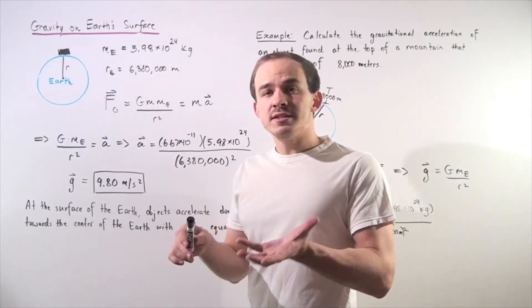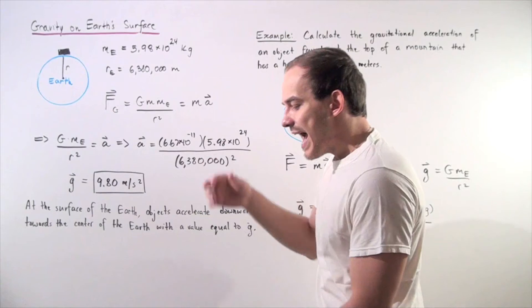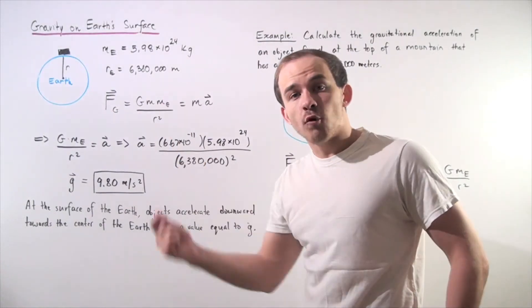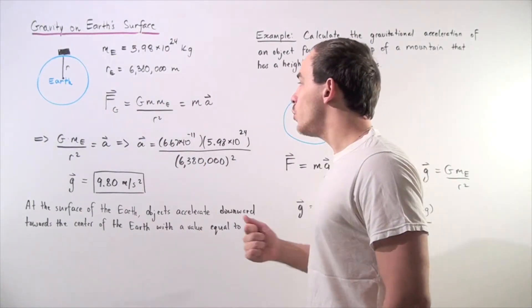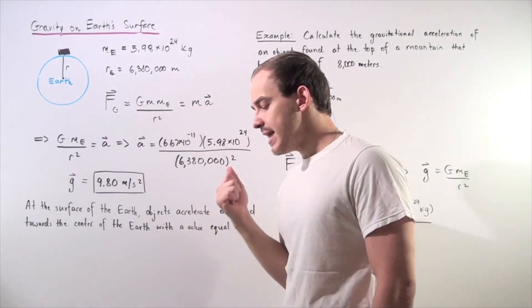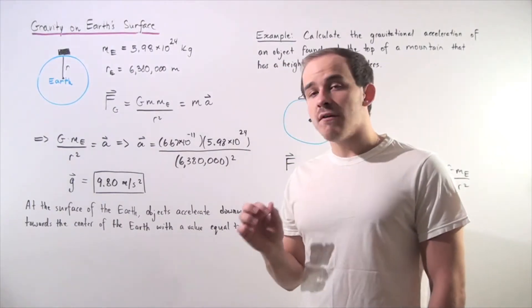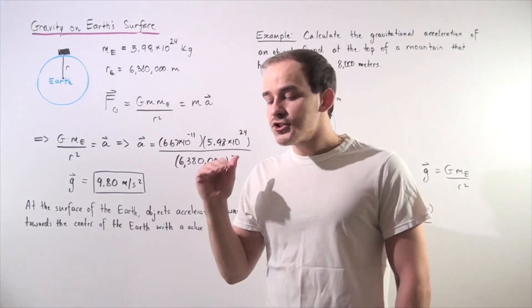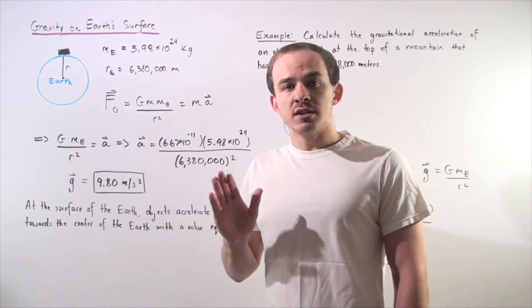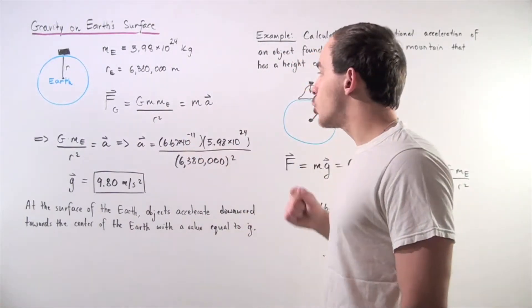Notice that according to the second law of motion, my object accelerates downward because a net force acts on my object. So, we can set this equation equal to m times a, and if we actually want to calculate what the acceleration of the object is on the surface, or very close to the surface of the Earth is, we can, using this equation.